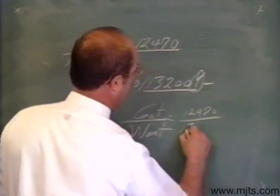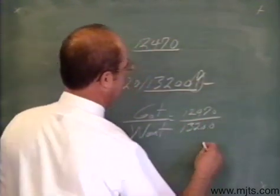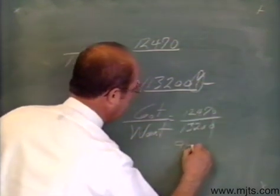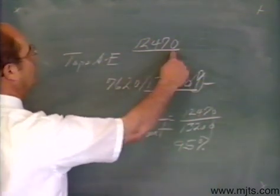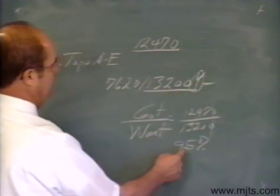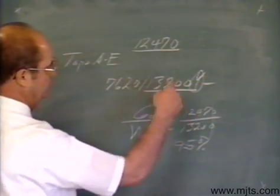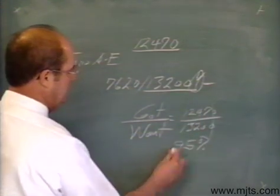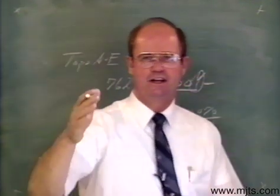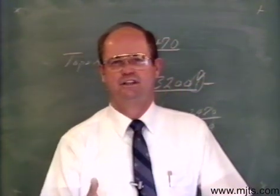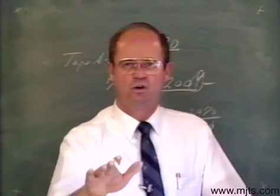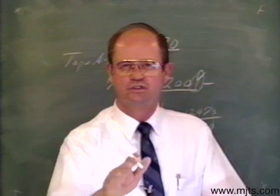Taking what I've got — 12,470 — and dividing by what I want for my transformer — 13,200 — you come out with 95%. So 12,470 is 95% of 13,200. The 95% tap is tap D. I would place the transformer on the D tap, which removes 5% of the windings, and my high side will match up and deliver the correct rating on the low side of that transformer.